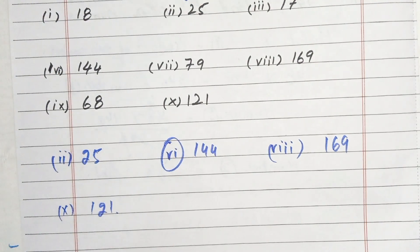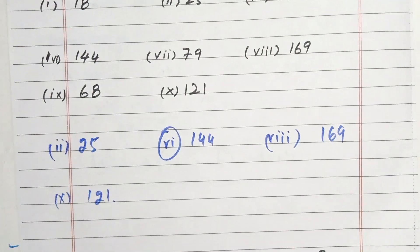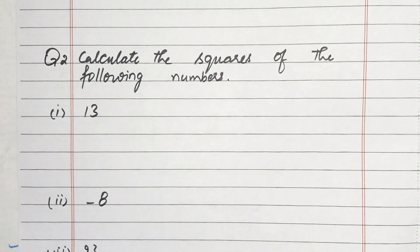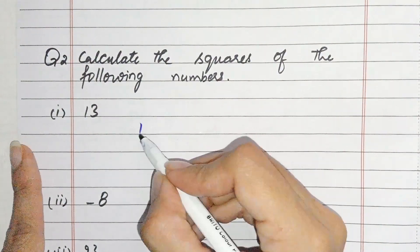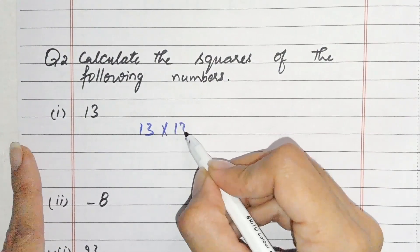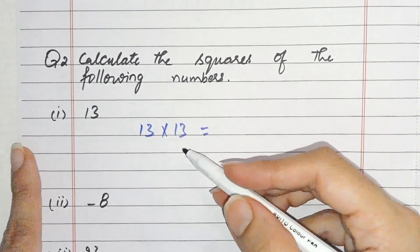So this question I got something on there and we got to solve it. Now question 2, to calculate the square of the following numbers. To calculate the square, you multiply the number by itself.